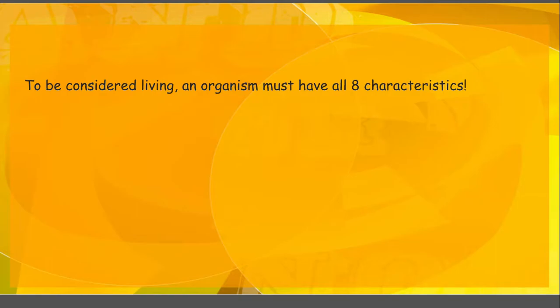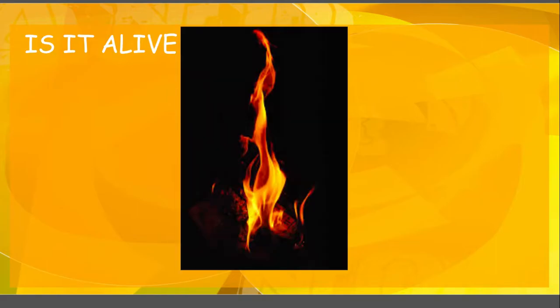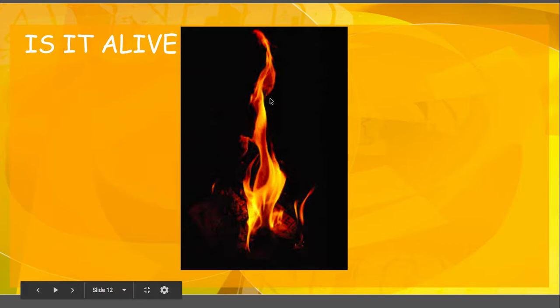Let's take a look at some examples — you can fill this in on your chart on your note sheet. Is it alive? Here's our picture: it's clearly a fire. Hopefully you know that this is no. We know fires can grow over time — they can get really big, like the California wildfires. But fire is not made of cells, it doesn't reproduce, it doesn't have DNA. It doesn't have any of that, so it is not alive.